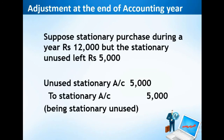At the end of the accounting year — which runs from 1st April to 31st March — we may have unused prepaid items. For example, if stationery purchased during the year was Rs. 12,000 but stationery worth Rs. 5,000 is still unused, that unused stationery becomes an asset. The entry is: Unused Stationery Account debit Rs. 5,000, to Stationery Account credit Rs. 5,000. This unused stationery is carried forward to the next year as a prepaid expense.